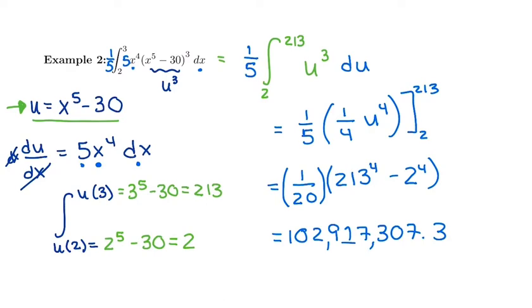And we get 102,917,307.3 as our net area under that curve because that's what integrals measure: net area or net change.